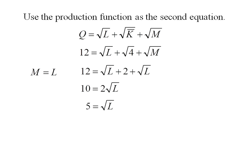5 is the square root of L. I need to square both sides to get rid of that radical sign. So 25 is equal to labor, and that's also the amount of materials.